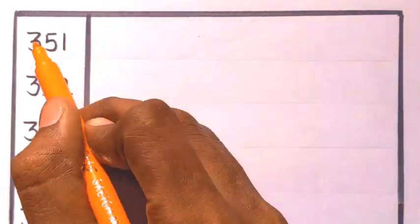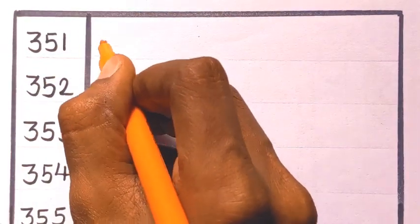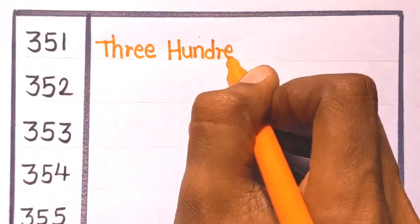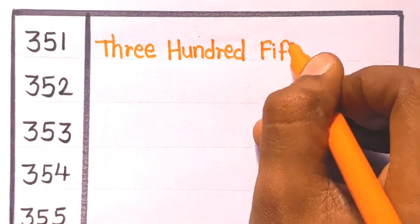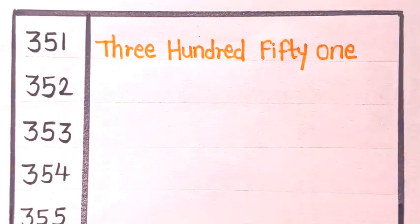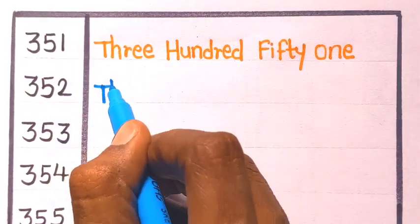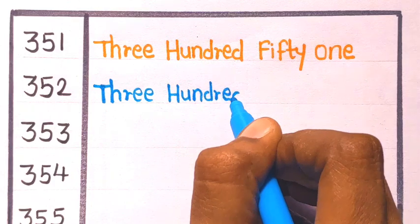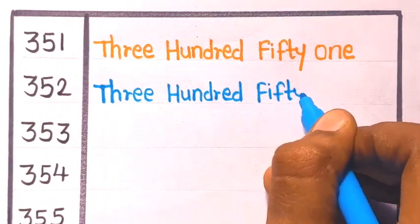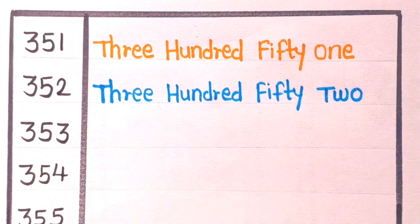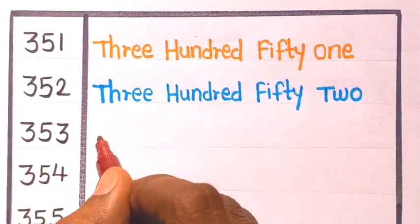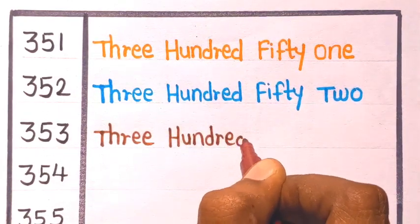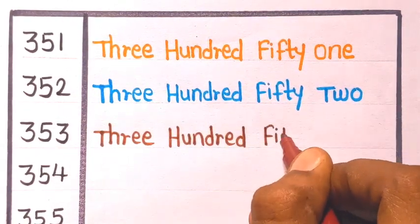Three fifty-one is three hundred fifty-one. Three fifty-two is three hundred fifty-two.